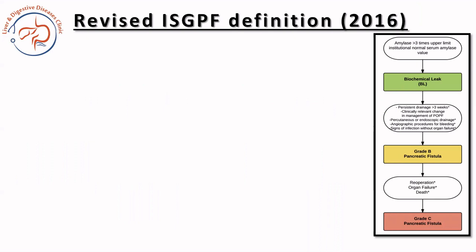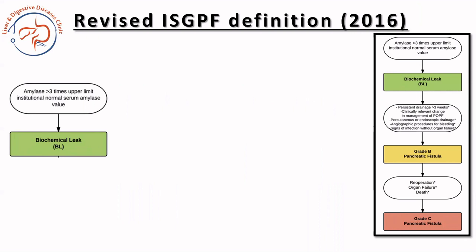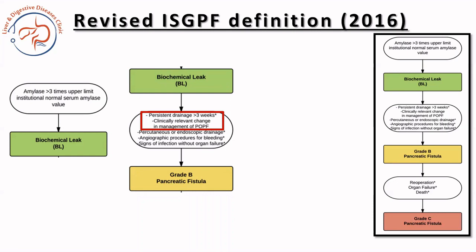The first definition of post-operative pancreatic fistula came in 2005 and was revised in 2016. The amylase should be more than 3 times the upper limit of the normal serum amylase value. An important change in the 2016 definition is that if there is no clinically relevant change and the drainage persists up to 3 weeks from the date of surgery, then it is classified as just a biochemical leak.